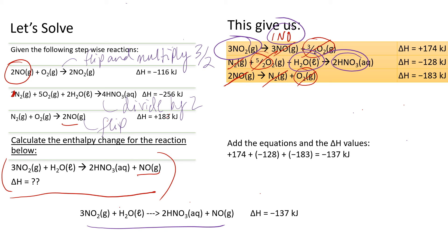I highly recommend rewriting this so you can see everything that's going on. Now notice again, if we multiply and flip. If we multiply this number, enthalpy, by 3 halves and flip it, we get a new number, plus 174. If we divide this number by 2, we get minus 128. And if we flip this, we have to take the negative of it, so we get negative 183. These are the values we are summing to get the overall enthalpy of our equation. And we've done it. The overall enthalpy of this equation is negative 137 kilojoules.